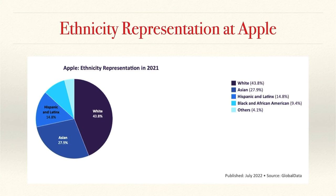This chart by Global Data shows ethnic representation at Apple. An astonishing 43.8% are white people, whereas a meager 9.4% is Black and African-American. We can also see the gender discrepancies at Apple. All of this data can be found on Apple's website under their diversity webpage. However, no matter how hard I searched, I couldn't find any data about the representation of the LGBTQ+ community, which is strange because Apple is known to be very friendly towards this community.